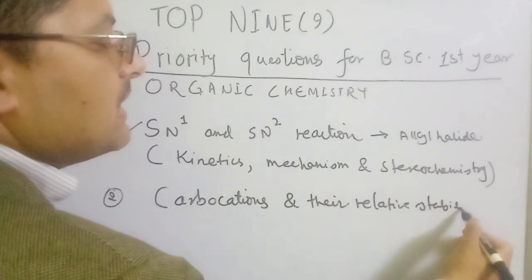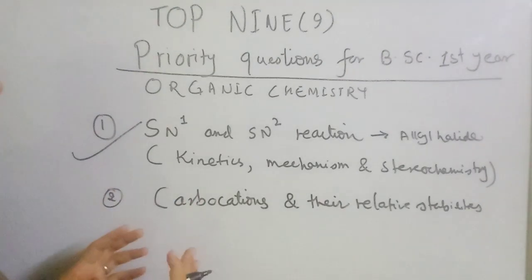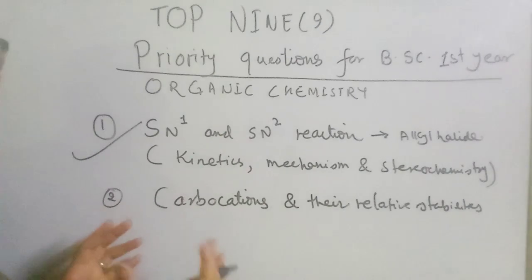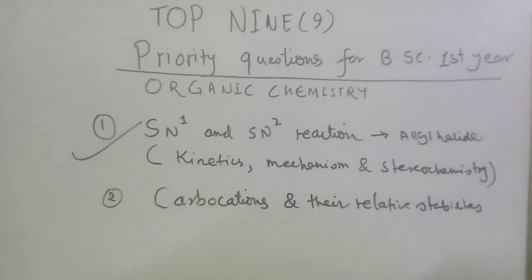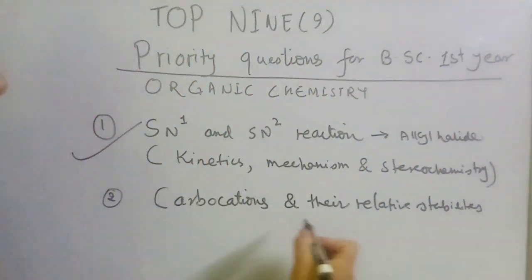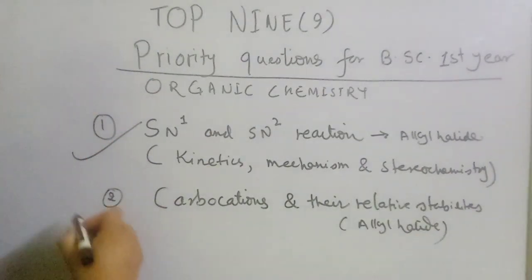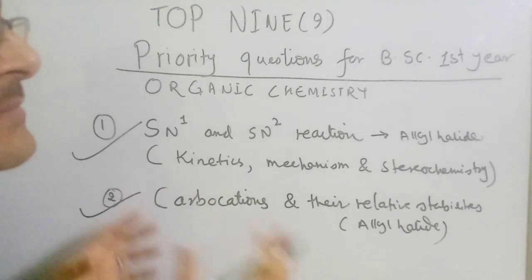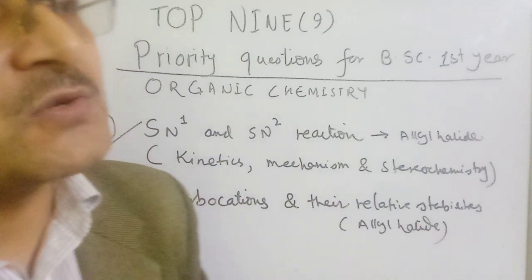Carbocations range from one degree to two degree to three degree in stability. We need to understand how stable each type of carbocation is. This topic is all part of the alkyl halide chapter, which is a high priority area we have to study carefully for BAC 1st year.